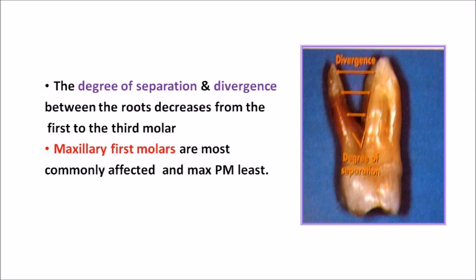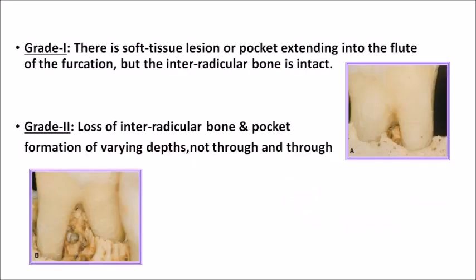Maxillary first molars are the most commonly affected and maxillary premolars are the least affected when it comes to furcation involvement. There are a number of classifications but the most accepted is Glickman's classification. According to Glickman there are four grades.